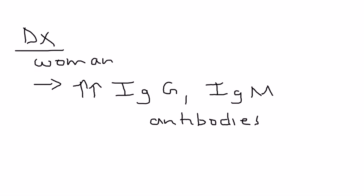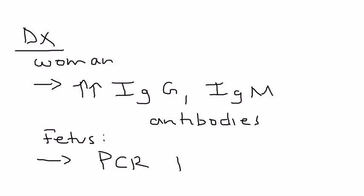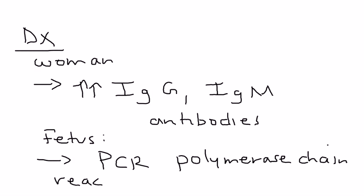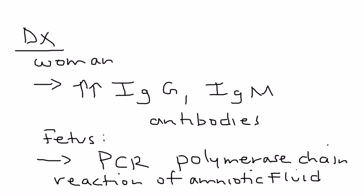That is the first test, and it involves testing the pregnant woman. The next test, if the fetus is suspected to be infected, involves testing the fetus. That is done with a PCR — polymerase chain reaction — and that test is actually performed on the amniotic fluid. This is basically how you diagnose toxoplasmosis.